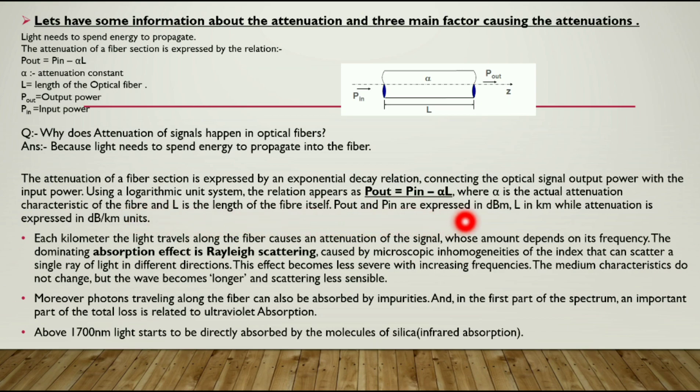P_out and P_in are expressed in dBm, L in kilometers while attenuation is expressed in dB per kilometer units. Each kilometer the light travels along the fiber causes an attenuation of the signal whose amount depends on its frequency. The dominating absorption effect is Rayleigh scattering caused by microscopic inhomogeneities of the index.